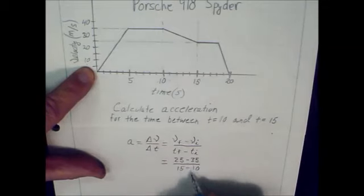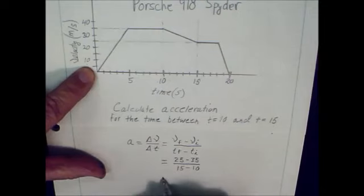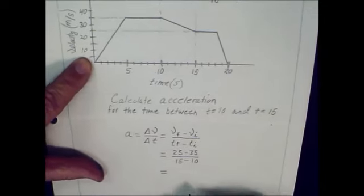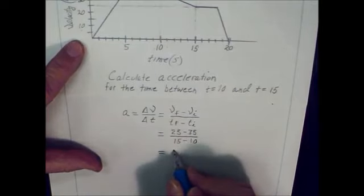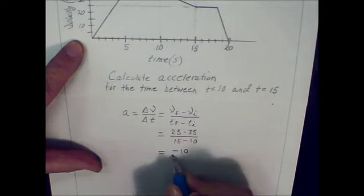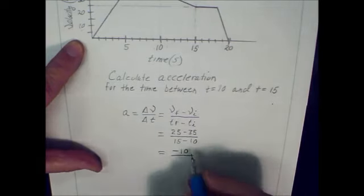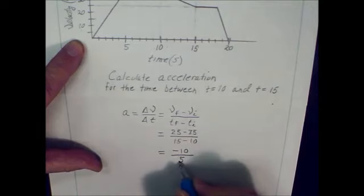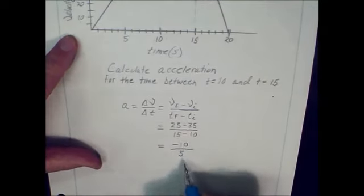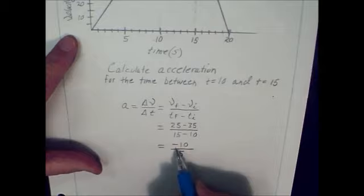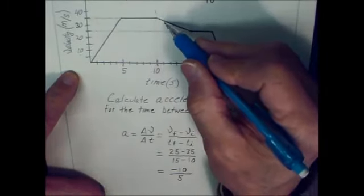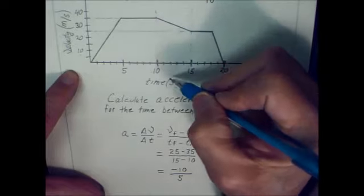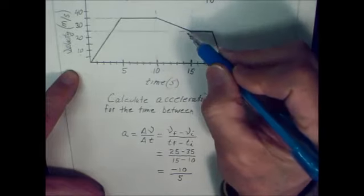So then I plug in everything and then as I solve my problem, I just keep going down the page here. 25 minus 35 is negative 10. 15 minus 10 is a positive 5. So you can already see that we're getting a negative result. And we should because the slope of the line on the velocity versus time graph is negative up here. It's a downward slope.